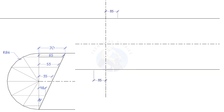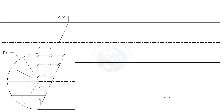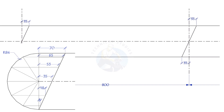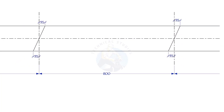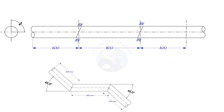Or divide the pipe into 12 parts, draw a layout as shown, and mark. Repeat the process. The direction of the marking shall be the same.